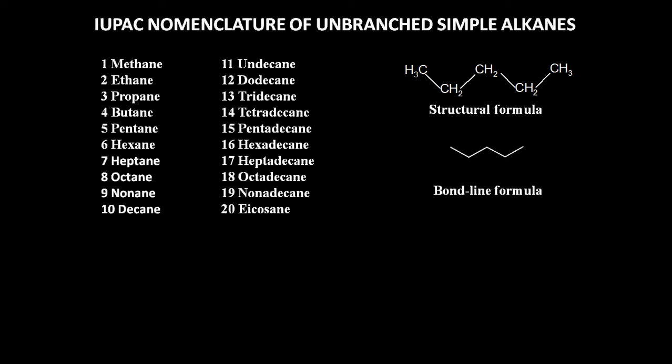When giving the IUPAC name to such molecules, the important part is to number the carbon atoms. We can start from the left hand side towards the right, or from the right hand side towards the left. Starting from the left: carbon 1, 2, 3, 4, 5. Similarly in the bond line formula: 1, 2, 3, 4, 5. The total number of carbon atoms is 5, so the prefix is 'pent' and the suffix is 'ane', giving the IUPAC name pentane.